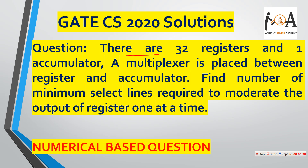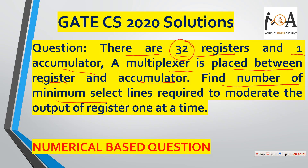Basically the question says there are 32 registers and one accumulator, and a multiplexer is placed between the registers and the accumulator. Total registers are 32. We are asked to find the minimum number of select lines required to route the output of the registers one at a time.